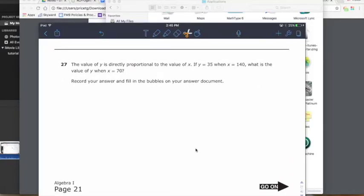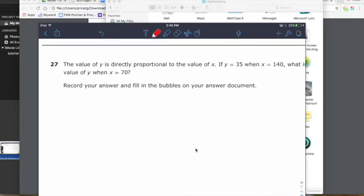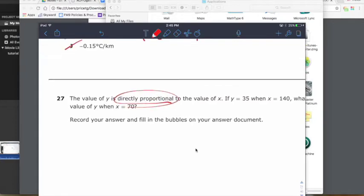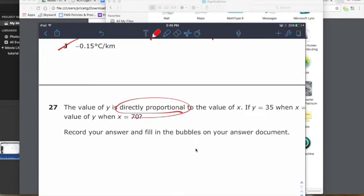Okay, 27 here. The value of Y is directly proportional to the value of X. If Y is 35 and X is 140, what is the value of Y when X is 70? Here's the key thing. They tell us it's directly proportional. Now, two approaches you can do right here. You can think of proportion and you can think of a fraction equals another fraction. Or you can think of this thing called directly proportional means direct variation. It means you can write an equation in this format, Y equals MX. The first way I'm going to solve it here, I'm going to solve it with a proportion.